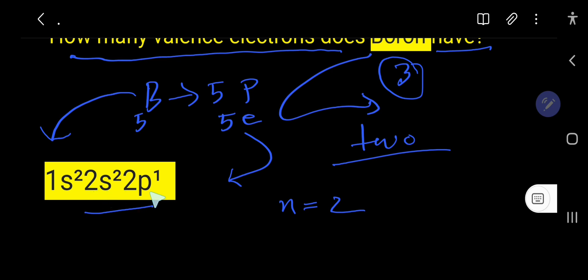2s sublevel and 2p sublevel. And if you add the electrons for these two sublevels, you are getting 2 plus 1, that is 3. So boron has 3 valence electrons. The outermost shell is called valency shell.